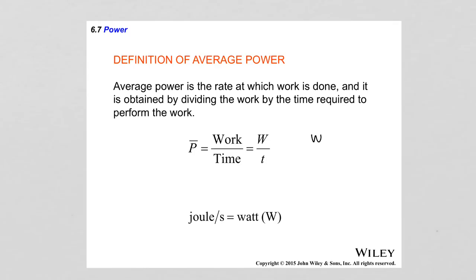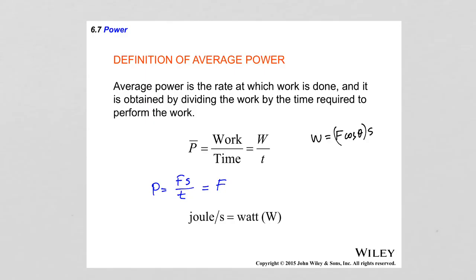Remember that work was defined as force times displacement times cosine of the angle between them. Substituting into the expression for power gives: power equals F times S divided by time. Assuming the angle between force and displacement is zero degrees, the cosine equals 1, and displacement divided by time is velocity. So power can also be calculated as force times velocity. These are two valid formulas for power based on the definitions of work and velocity.